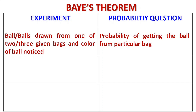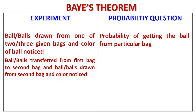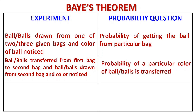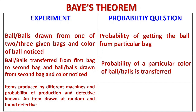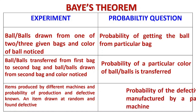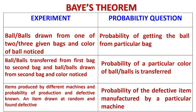If the probability question is asked about the color of the ball, it is a total probability problem. If the problem is asked about the particular bag — color is noticed, what is the probability it came from bag 1, bag 2, bag 3 — then it is Bayes' theorem. Similarly, if a ball is transferred to a second bag and some balls are drawn and the color is noticed, you may be asked about a particular color transferred. Also, if items are produced by different machines and the probability of production and defective items are known, and an item is drawn and found defective, in Bayes' theorem we find the probability that the defective item was manufactured by machine 1, 2, or 3. Bayes' theorem is highly useful for doing such rectifications.